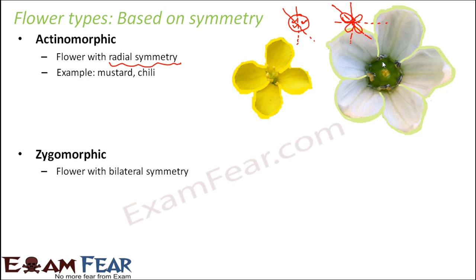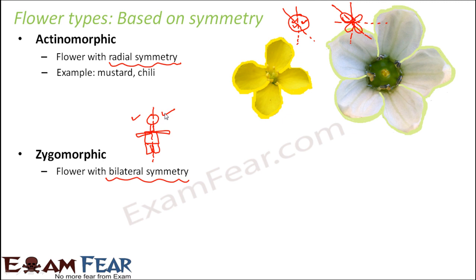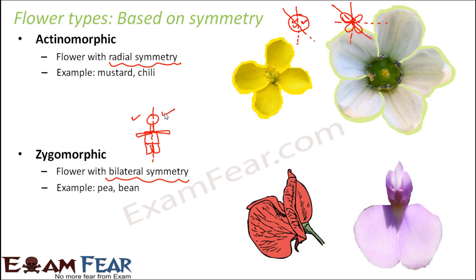The next type is zygomorphic — any flower with bilateral symmetry. Bilateral symmetry means if you take one specific axis, you can divide the flower into right and left halves. For example, the human body exhibits bilateral symmetry: if you divide it along a central axis, you get one right half and one left half. Similarly, these kinds of flowers are called zygomorphic. Examples are pea flowers and bean flowers. Looking at the front view of a pea flower, if you consider a vertical axis, you get two equivalent right and left halves, which proves it has bilateral symmetry.